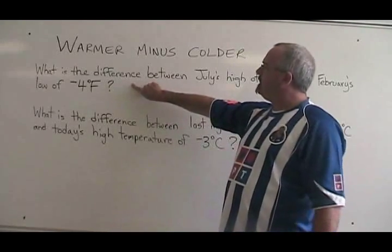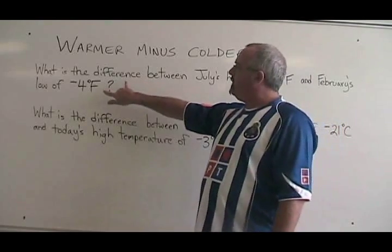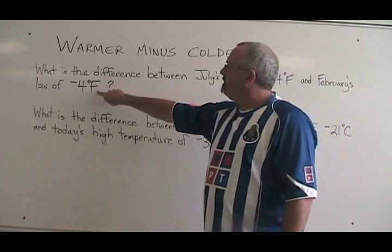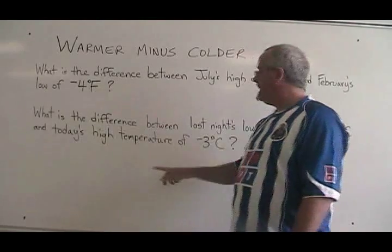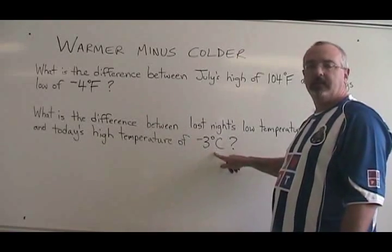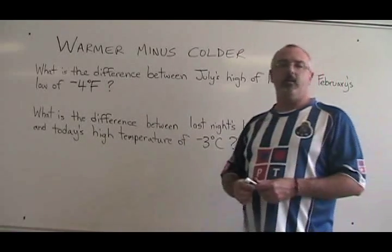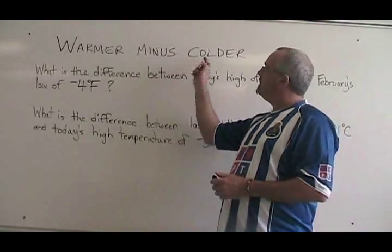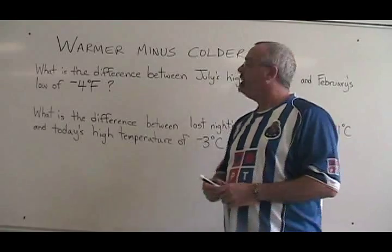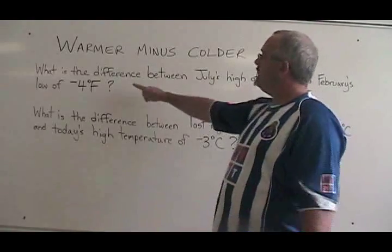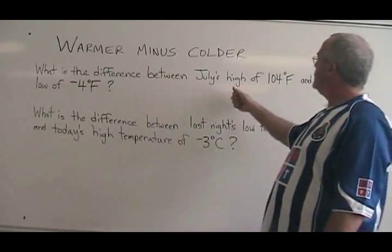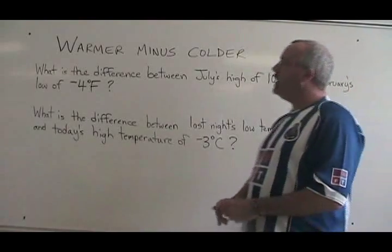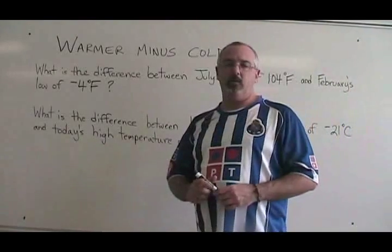In these two examples, I am dealing with two temperatures in each. In the first one, the temperatures are in degrees Fahrenheit. In the second one, they are in degrees Celsius. It doesn't matter whether you are using the metric system or the imperial system — the warmer minus colder trick works for both. The first question says: what is the difference between July's high of 104 degrees Fahrenheit and February's low of negative four degrees Fahrenheit?